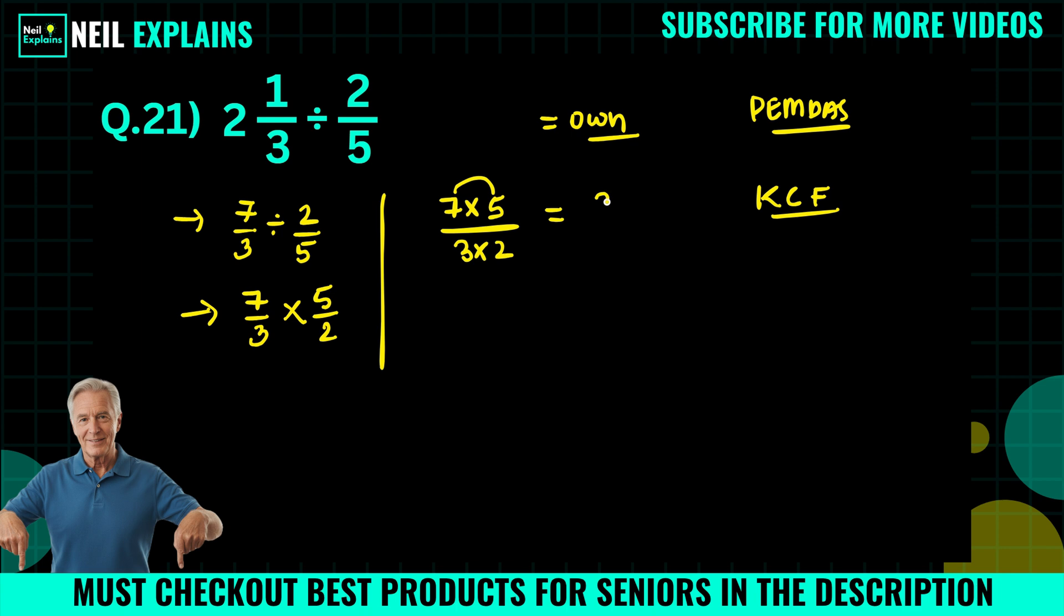Now 7 into 5 that is equal to 35, and 3 into 2 that is equal to 6. Or you can say 5 and 5/6. This will be the right way.